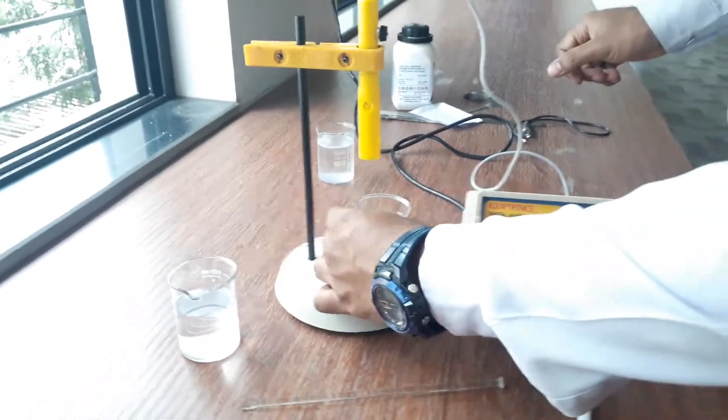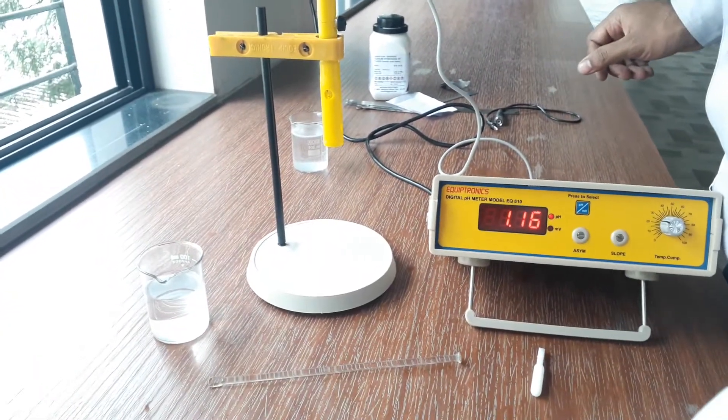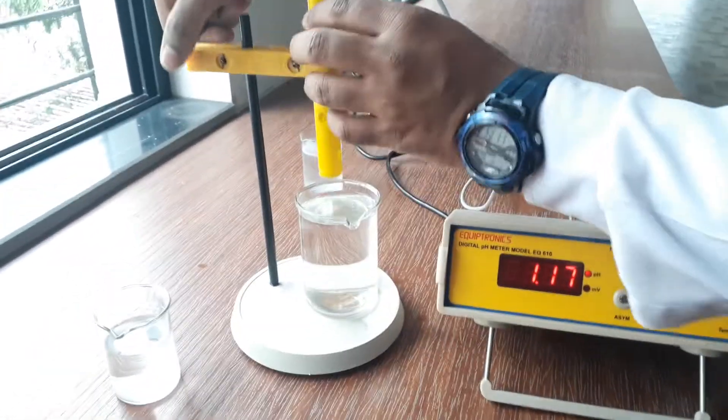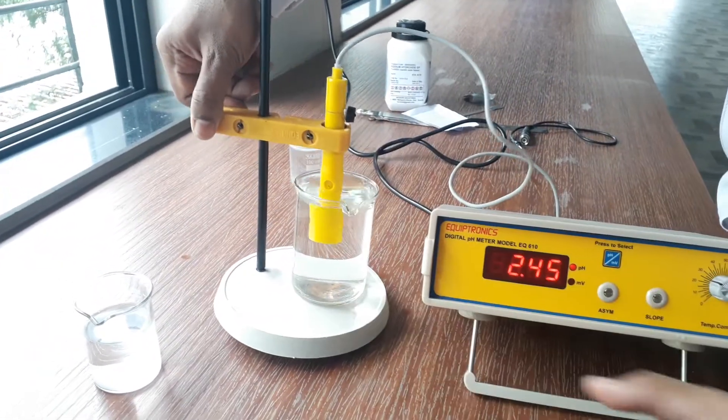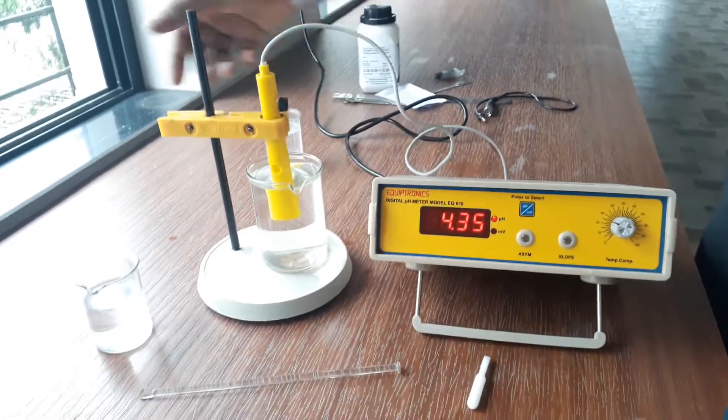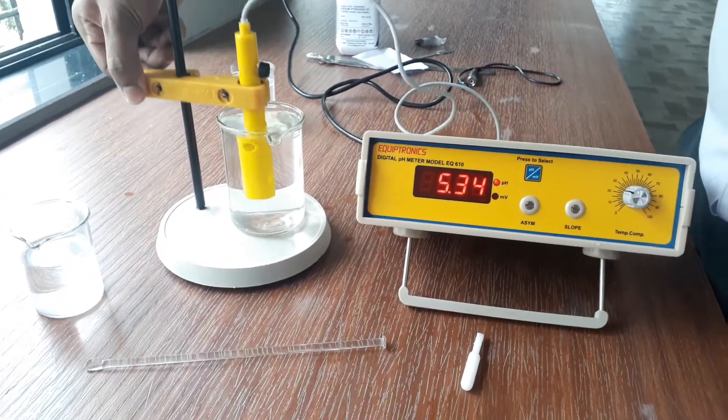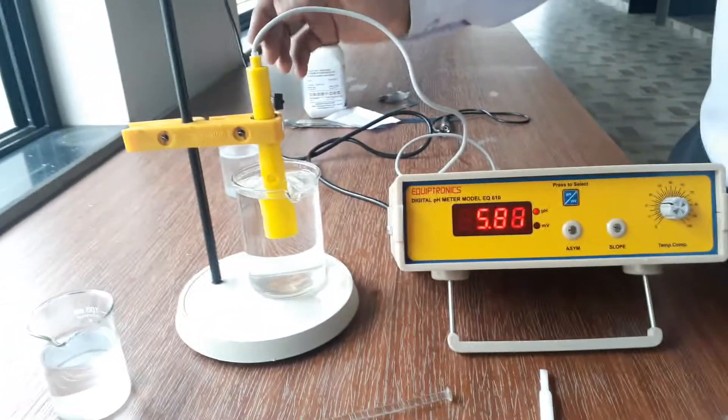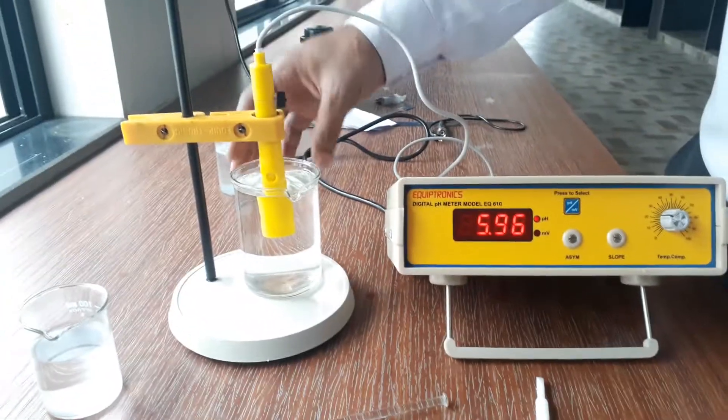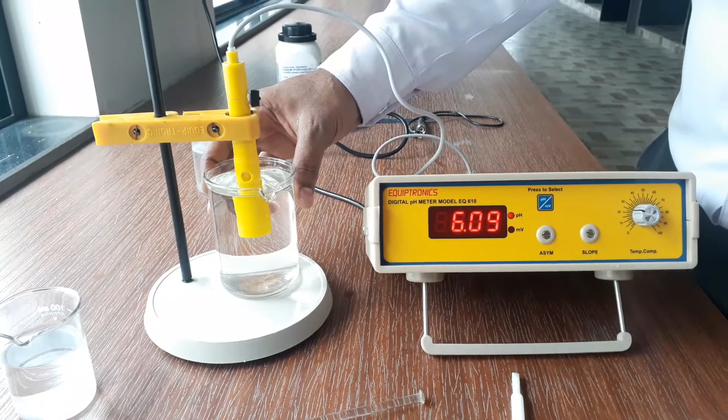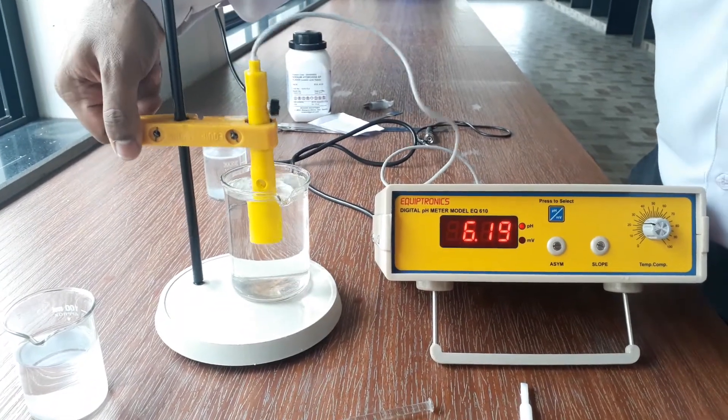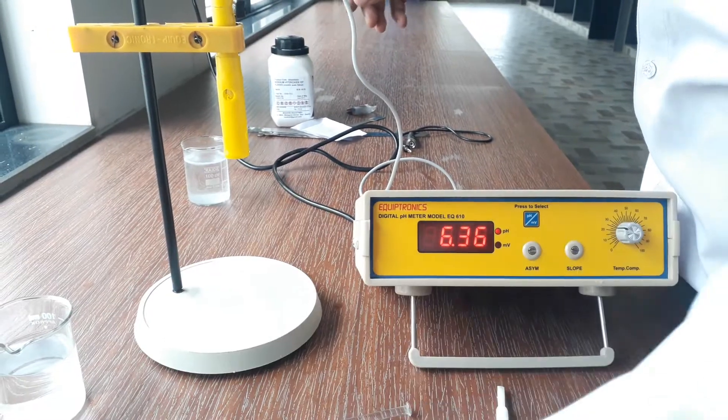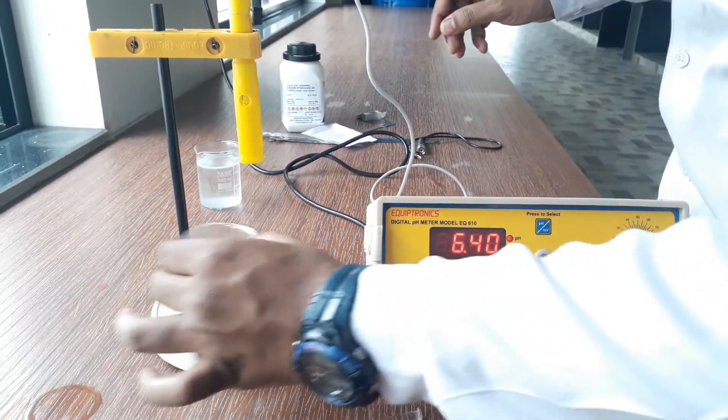Before this we have dipped that solution in the acid, that's why we have to wash this electrode so that there will be no part of acid which is attached to the electrode. So we can wash this electrode first so that whatever minor acid or base is there will be removed. Now we will again take the next solution that is a basic solution.